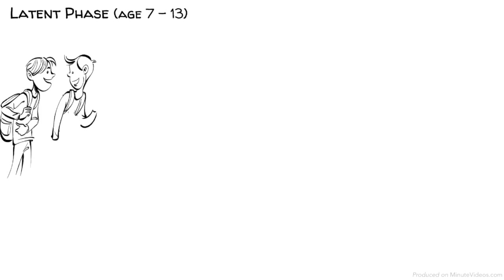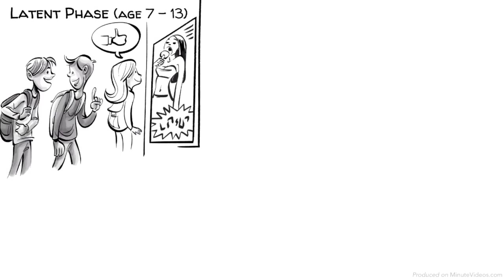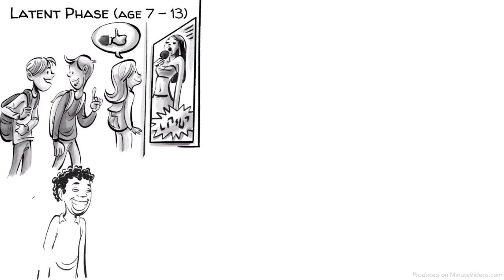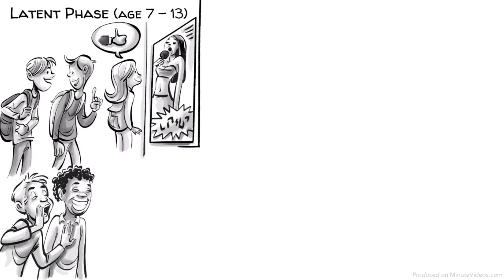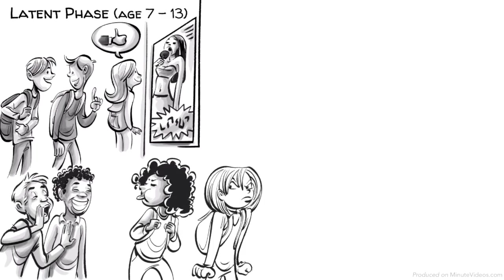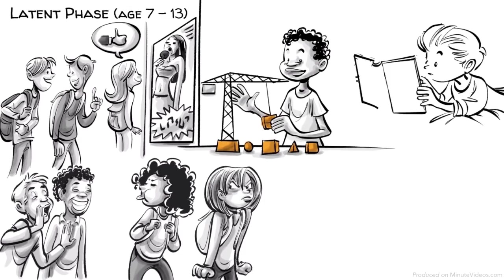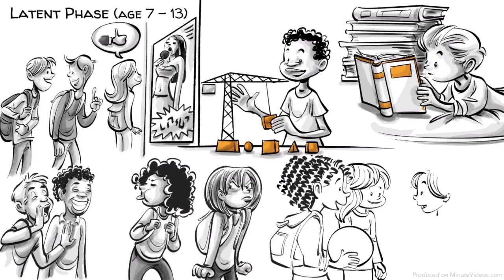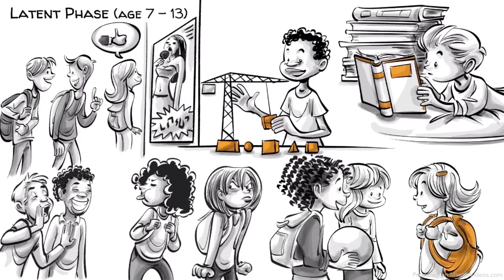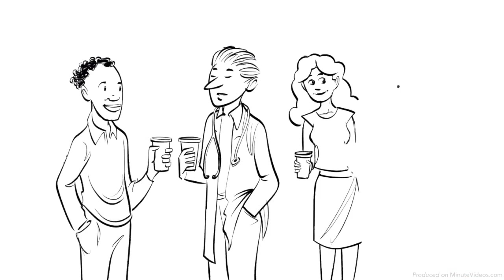Latent phase, age seven to thirteen. In this phase, our libido is suppressed as our sexual energy is being sublimed into developing life skills. Our super-ego strengthens and we strongly identify with social values, same-sex heroes and friends. Hans follows many hobbies. Ernst loves learning at school and Ida makes lots of new girlfriends. There is no real conflict in this phase.